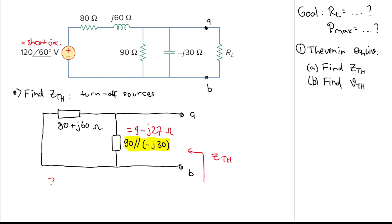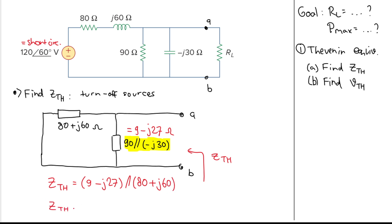From here we can calculate Zth. We have 9 - j27, and that will be in parallel with the other impedance, which is 80 + j60. We can use the calculator to compute this.